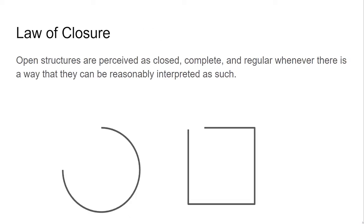In the law of closure, structures are perceived as closed, complete, and regular whenever there is a way that we can reasonably interpret them as such. Instead of seeing two lines, it is possible you perceive a circle that is almost closed and a square that is almost closed.